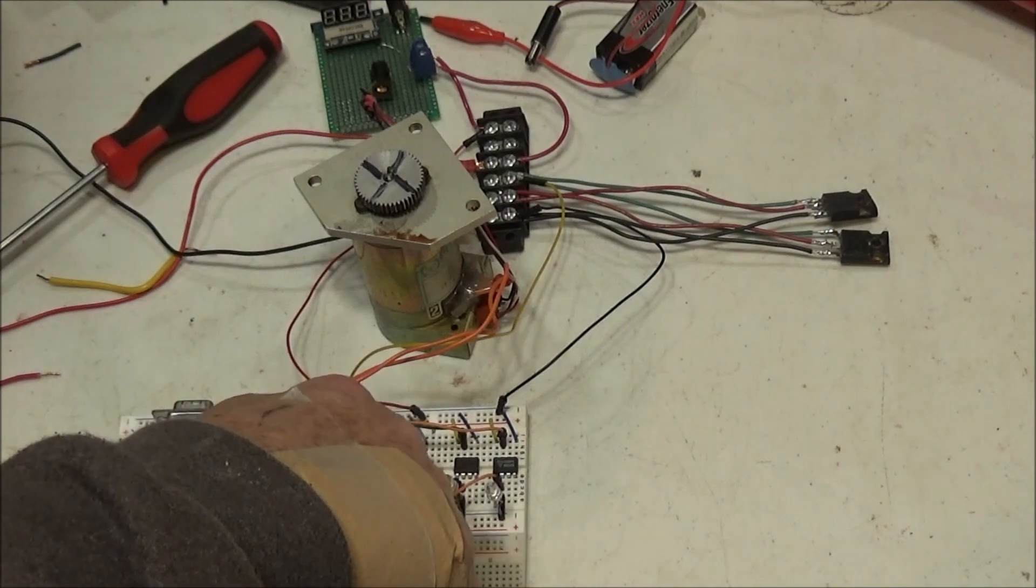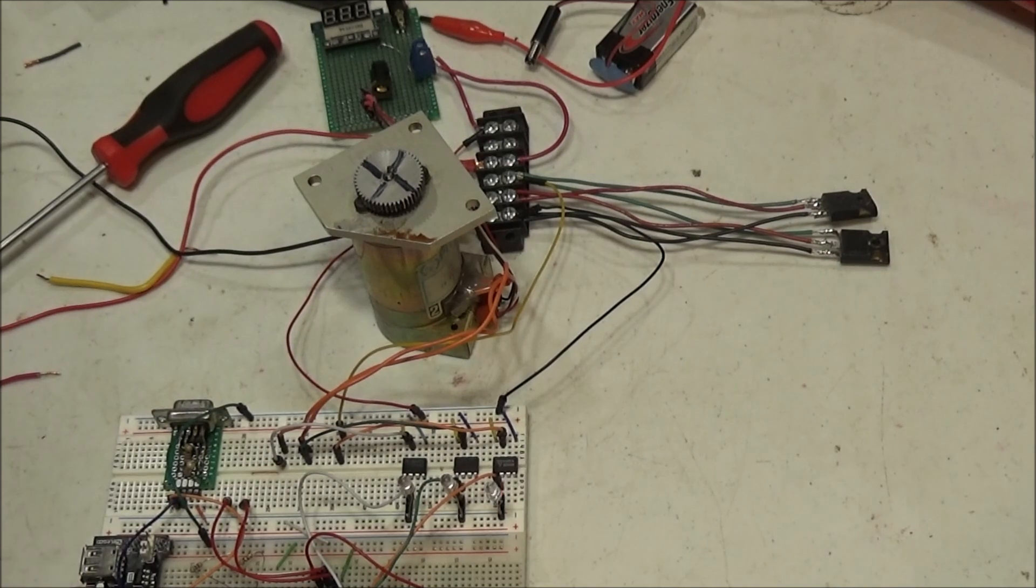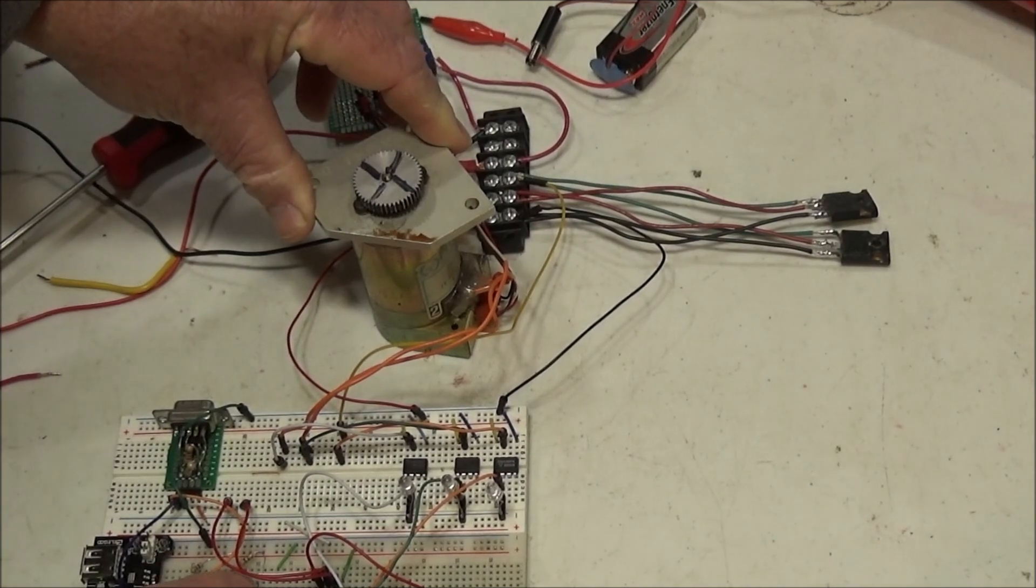I'm using a pair of TC4420s with a PIC microcontroller, or it can be an Arduino, to simply act as a low-power H-bridge. They claim to be able to handle up to 6 amps peak.